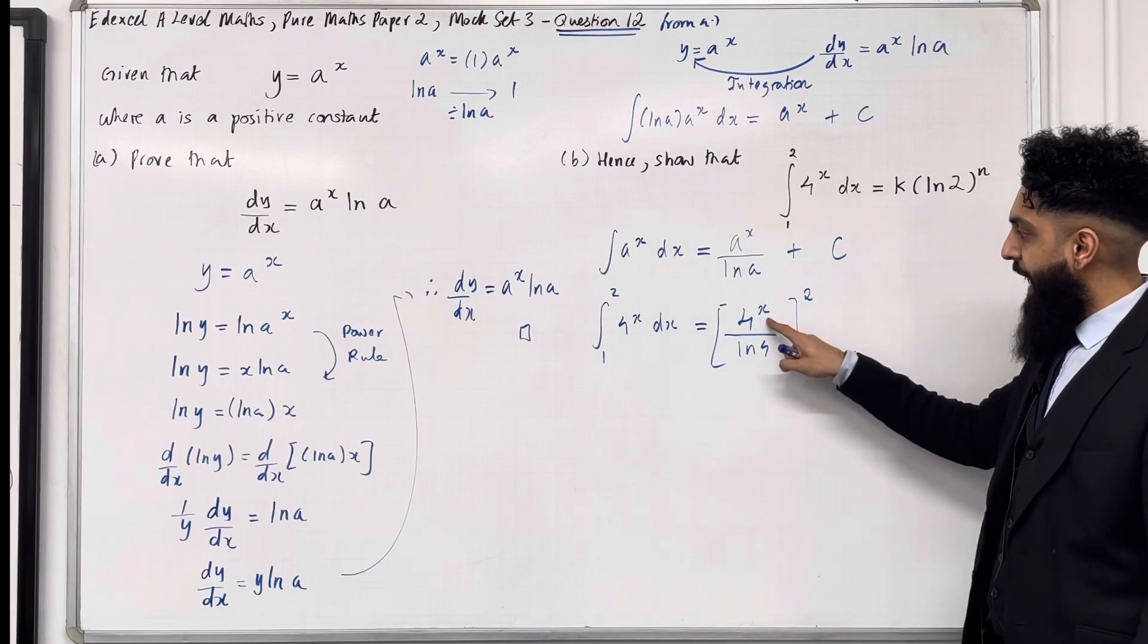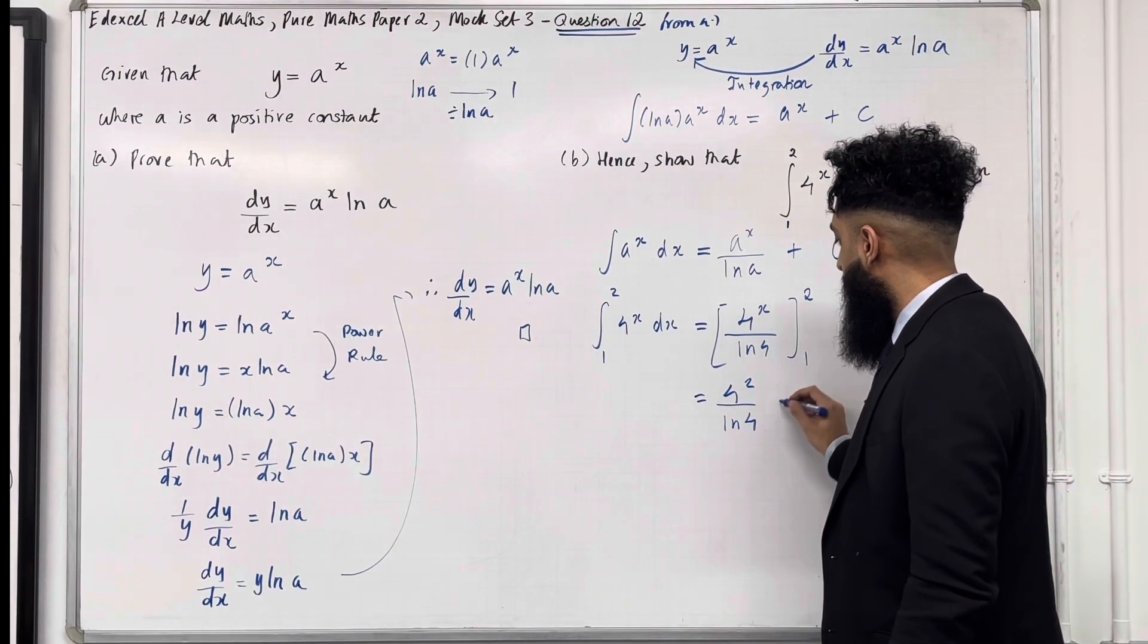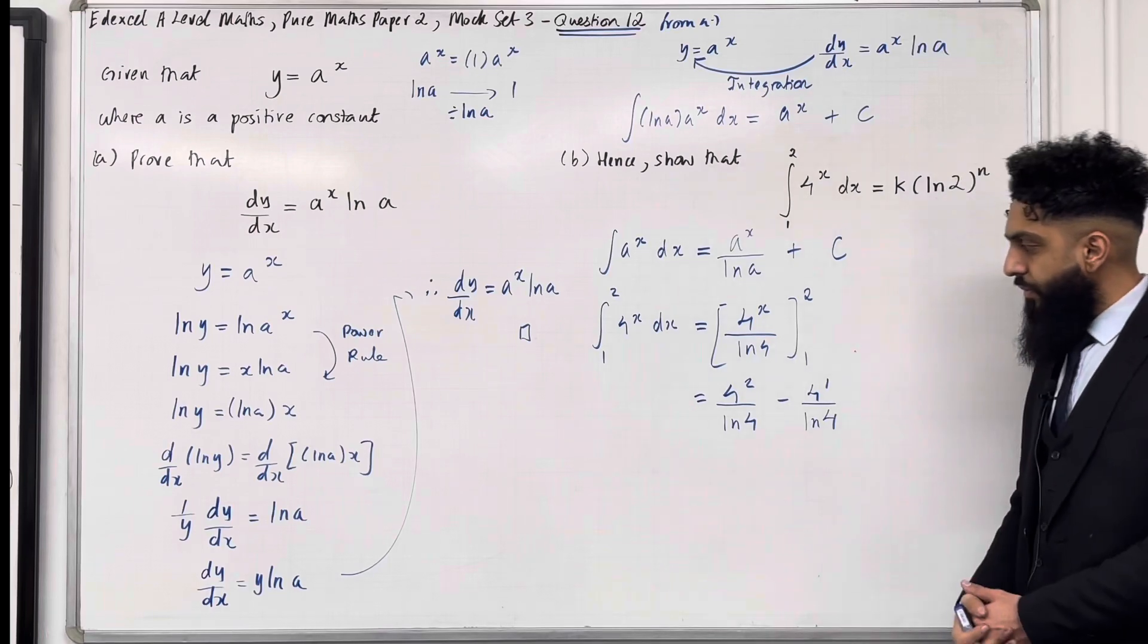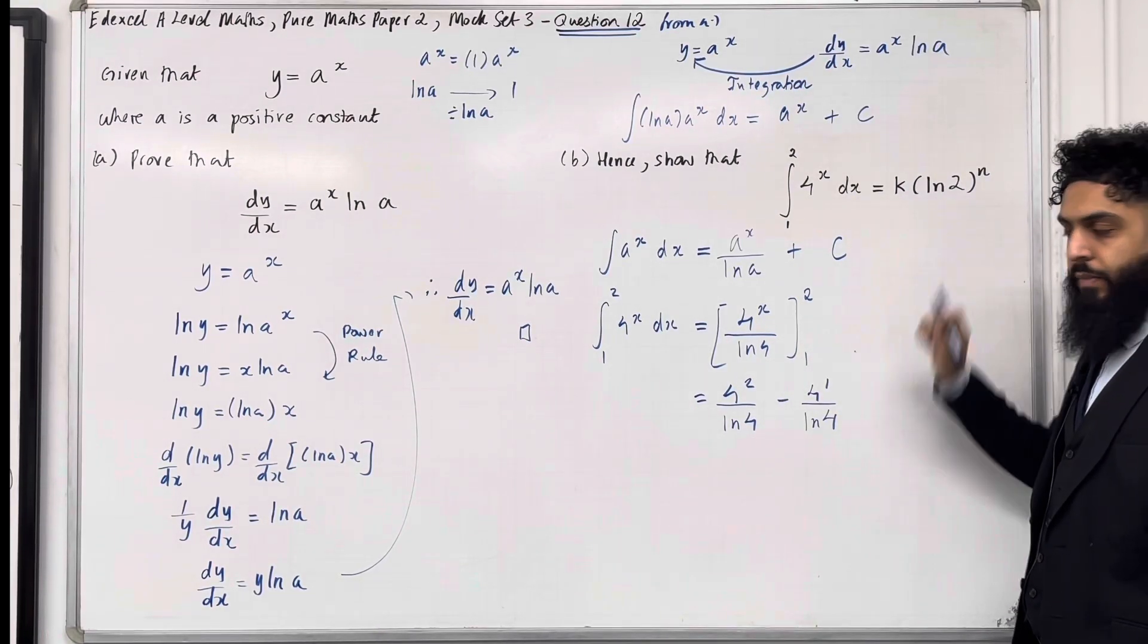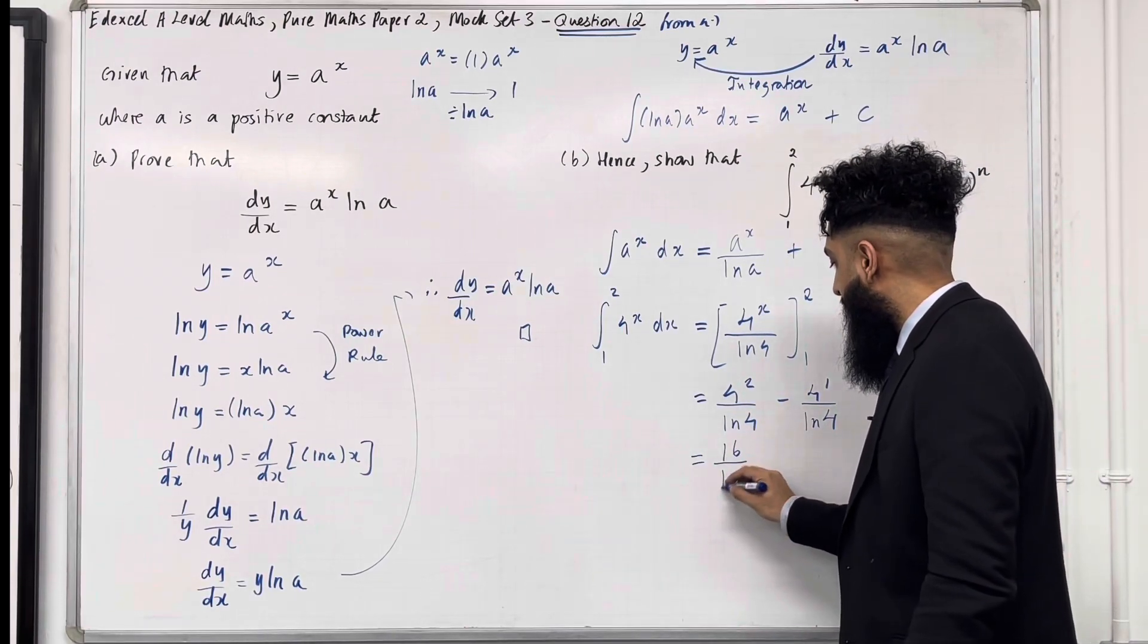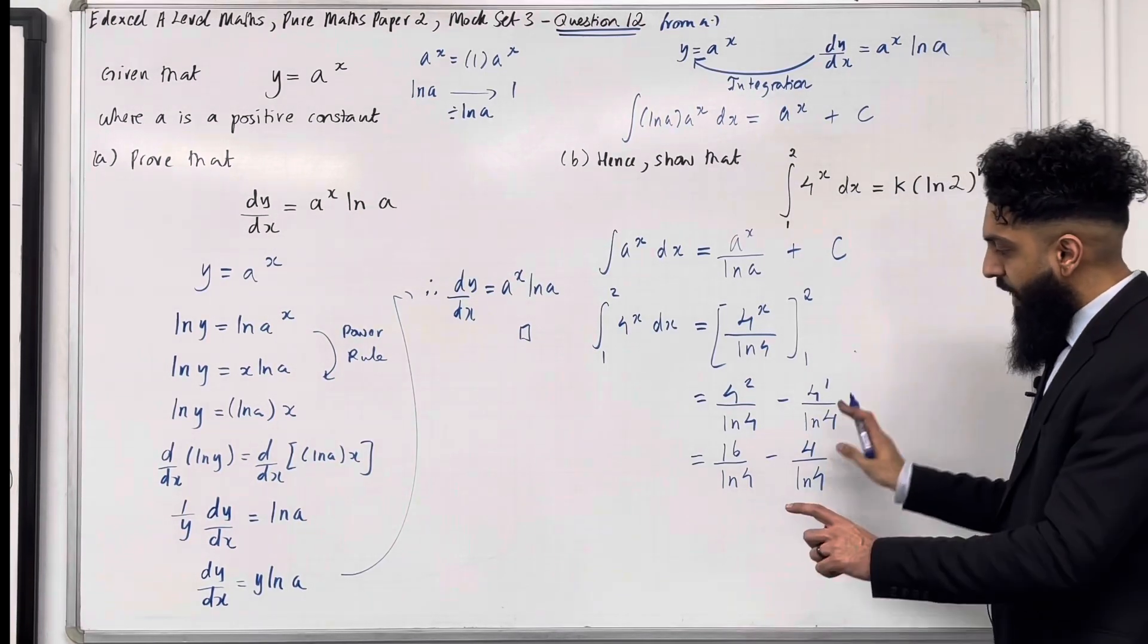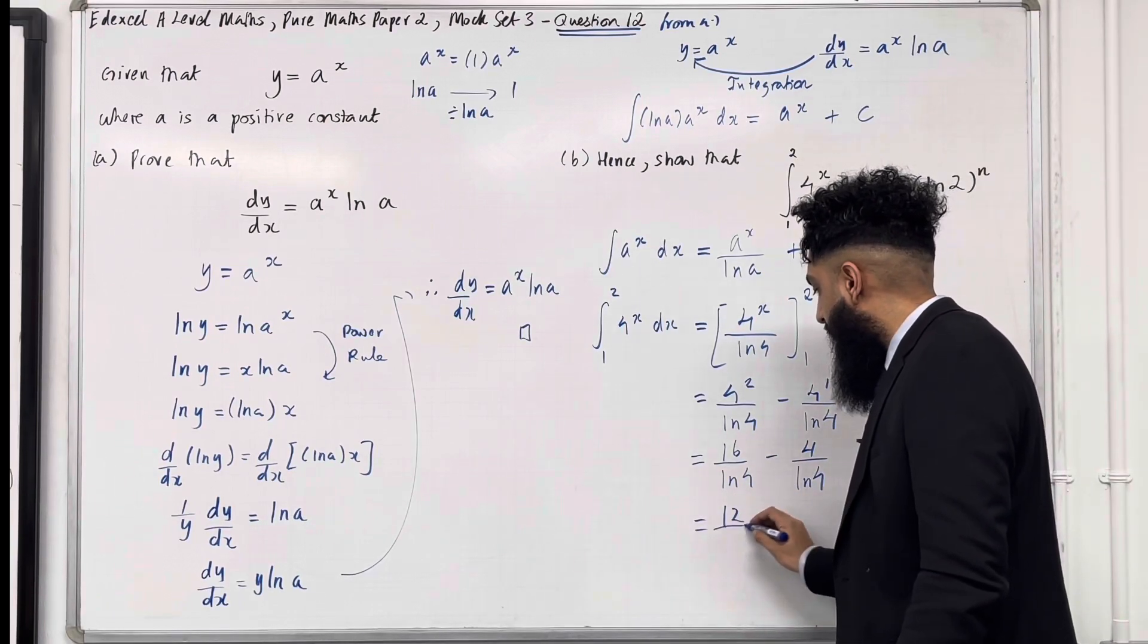I can replace the x with the upper limit, so I've got 4 squared over ln 4. Take away, replace the x with the lower limit, 4 to the power 1 over ln 4. I want to rewrite this in this particular form. So what we have over here is that 4 squared is 16 over ln 4, minus 4 to the power 1 is 4 over ln 4. We can combine the fractions, 16 take away 4 is 12 over ln 4.